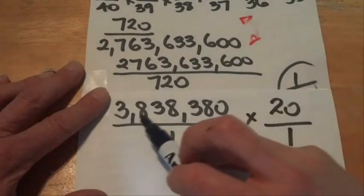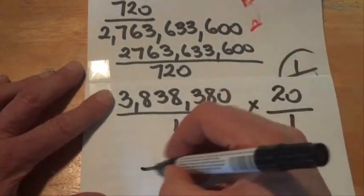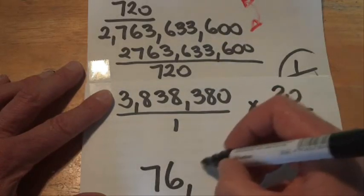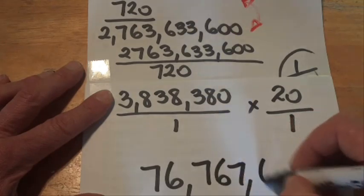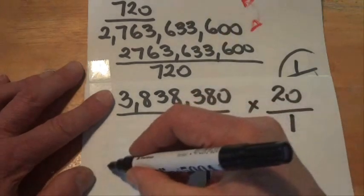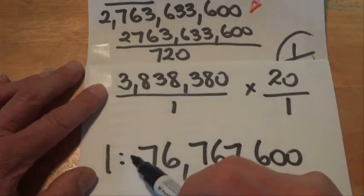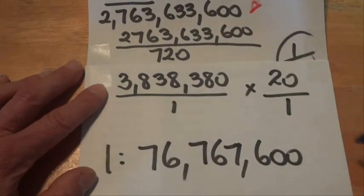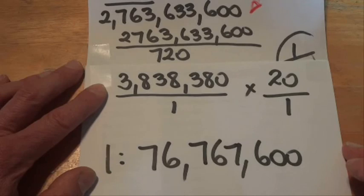So if we multiply 3.8 million by 20, we come up with the figure of 76 million: 76,767,600. Therefore, your chances of selecting Powerball - six numbers out of 40, and then one number out of 20 - are one chance in 76 million.